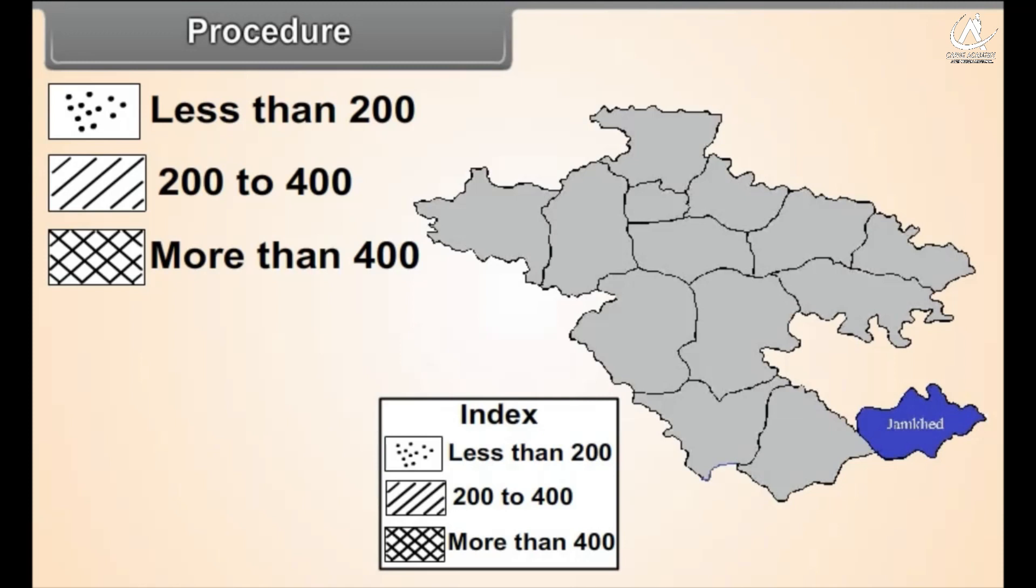Draw the district map given in figure 2.5 on a sheet of tracing paper. Use dark to faint shades for higher to lower density values. Give proper shades to different talukas on the basis of their density values and complete the map.